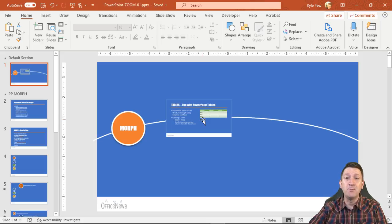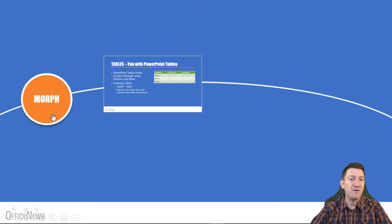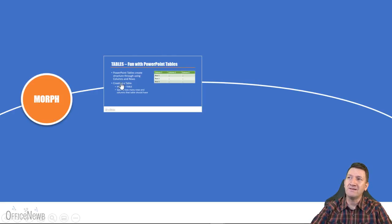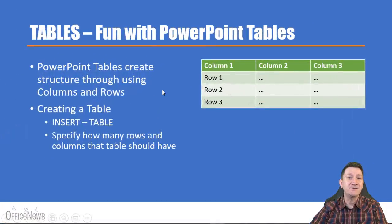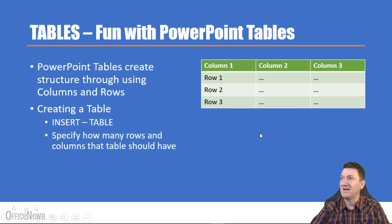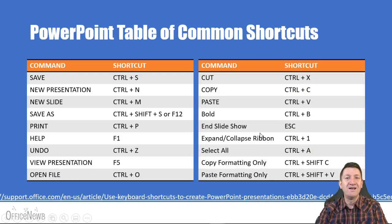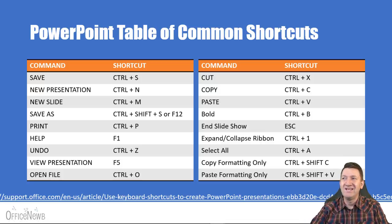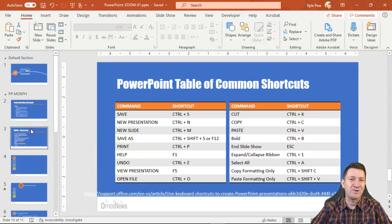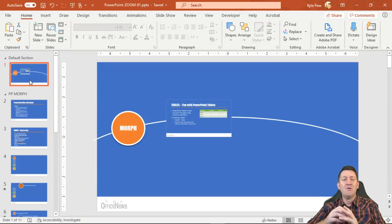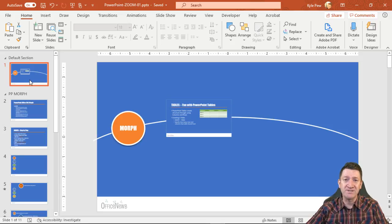I'll hit F5 to start the presentation. There's my button for Morph. But now I've got this new button — Tables, Fun with PowerPoint Tables. I click it, skip over the Morph section, and I'm now in the section about tables. I click or use the right arrow to navigate through those slides. It's a more dynamic, exciting, and efficient way to navigate within your presentation — not so linear, slide one, two, three, four.